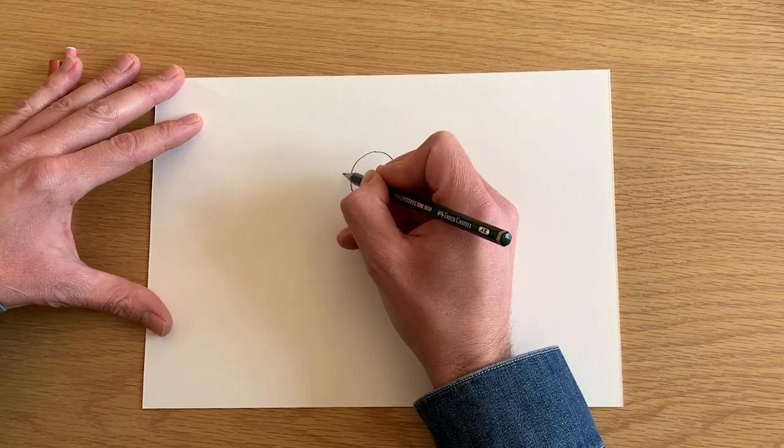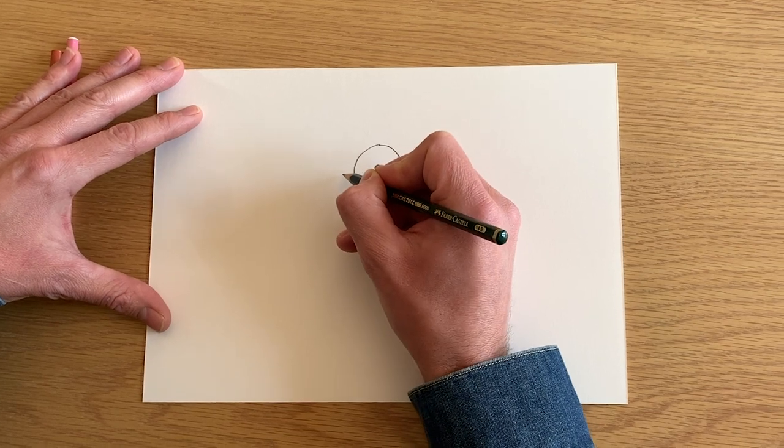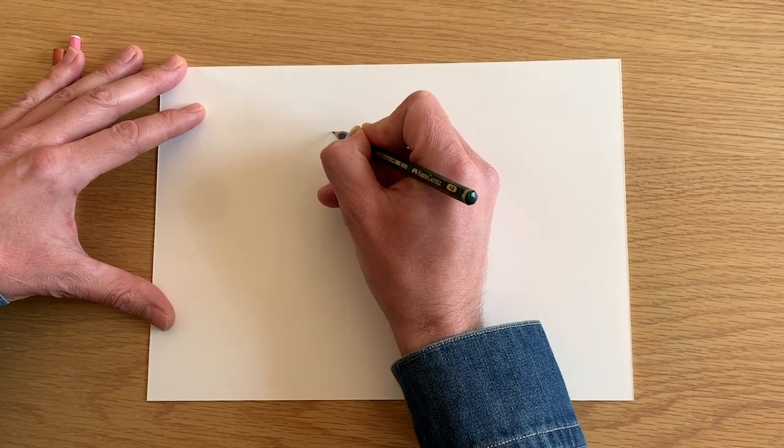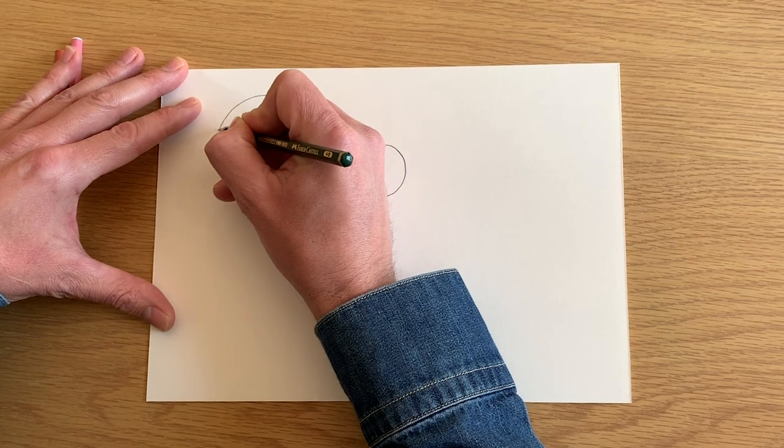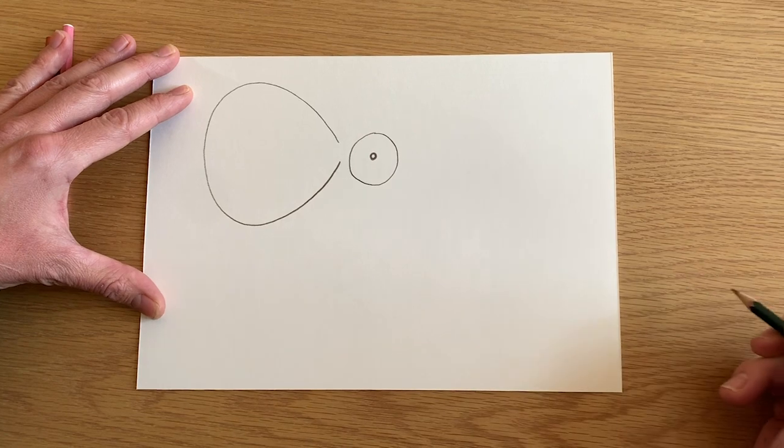Now this little mouse has very big ears, so you're going to draw a kind of C shape like this, all the way around and back up like that.